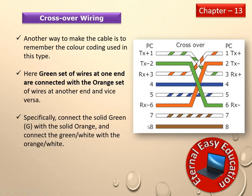Another way to remember the crossover cable is by color coding: the green set of wires at one end connects with the orange set of wires at the other end, and vice versa. Specifically, connect solid green with solid orange, and green-white with orange-white.